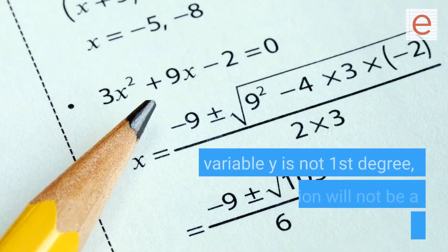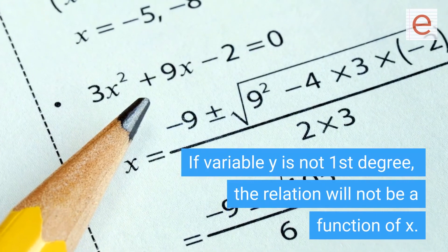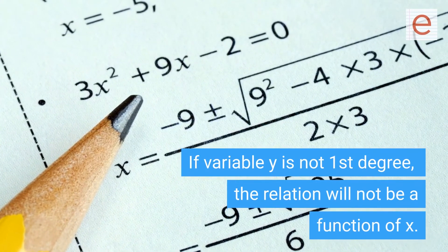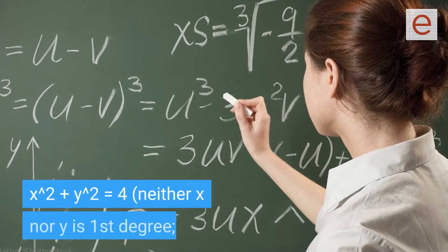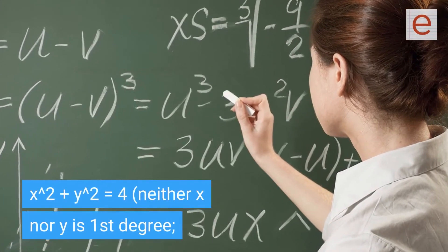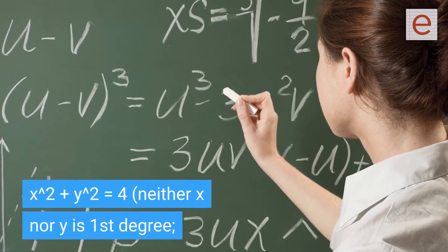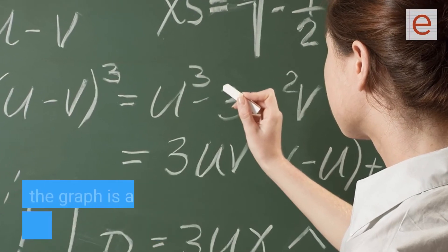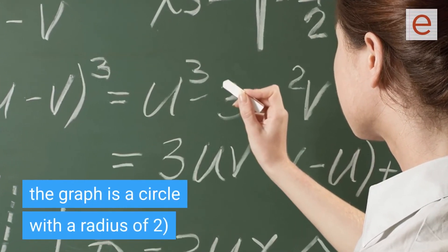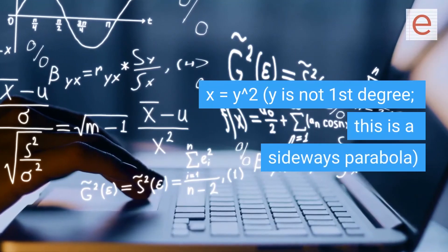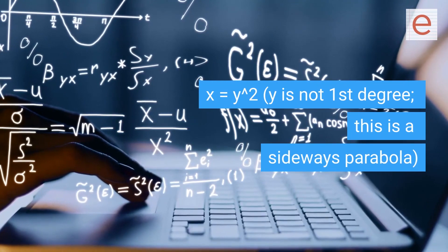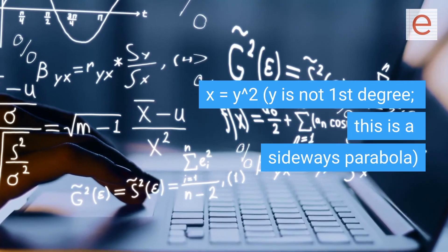If variable y is not first degree, the relation will not be a function of x. Example: x² plus y² equals 4, neither x nor y is first degree, the graph is a circle with a radius of 2. x equals y²: y is not first degree, this is a sideways parabola.